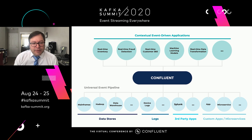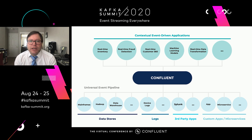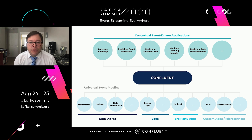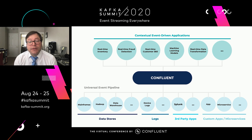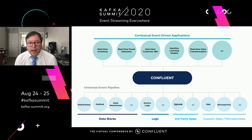With that out of the way, we can state what our goal is here at Confluent, which is to build a complete event streaming platform based on Apache Kafka, and help you turn it into the central nervous system for all of your events — across data stores, logs, third-party apps, custom apps, and microservices — to enable contextual event-driven applications like real-time inventory, real-time data transformation, real-time customer 360, and real-time fraud detection. And to do this both on the cloud and on-prem.